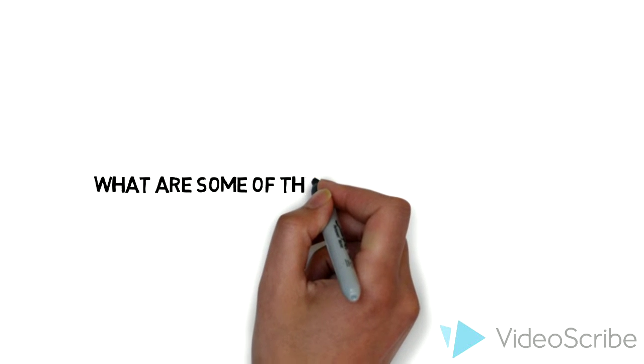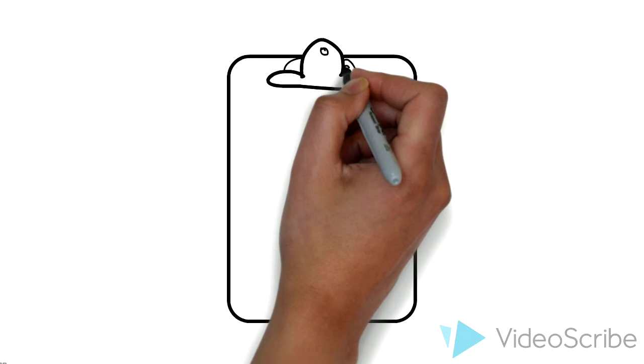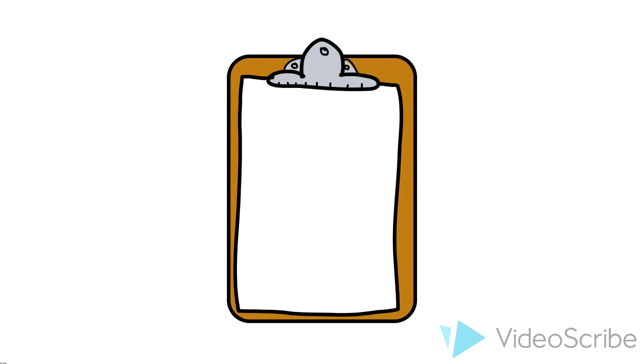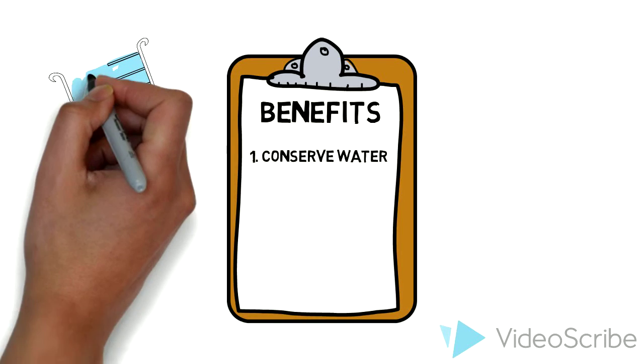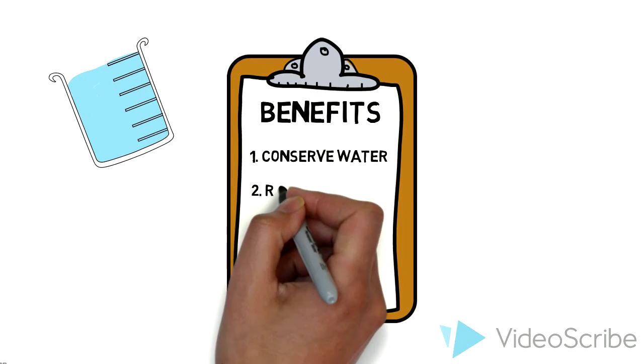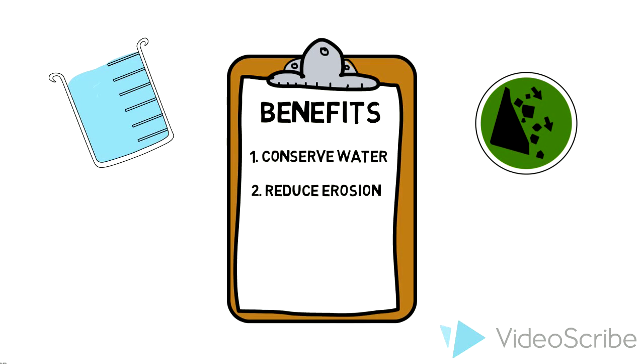But how can doing this help? Well, by collecting and using rainwater, you are able to reduce tap water usage. As well, rain barrels reduce runoff, and therefore less water will enter areas susceptible to erosion.